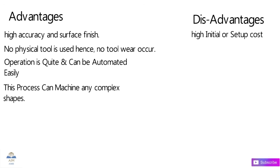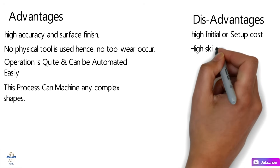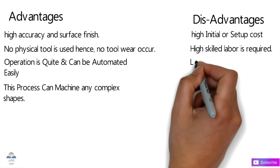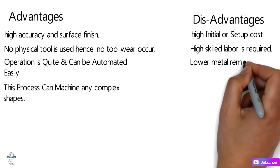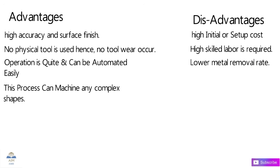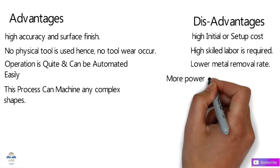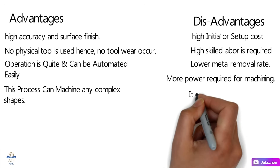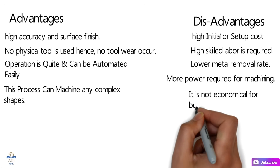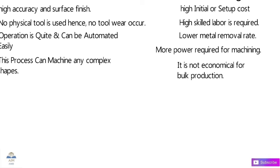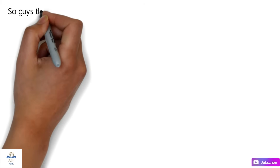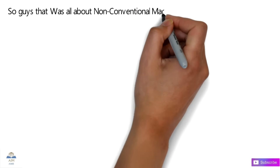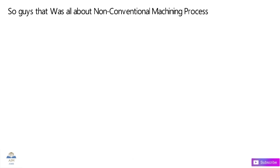The disadvantages of non-traditional machining include: high initial setup cost, requirement for highly skilled labor, lower metal removal rate which means longer processing times, and higher power consumption. Due to these factors, it is not economical for bulk operations.